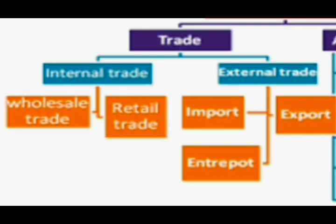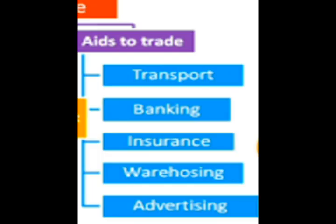When a producer has produced goods and wants to sell to the consumer, and when the consumer needs a good and is looking for the product, there are several hurdles, because the producer is far away from the consumer. The producer produces goods in anticipation of demand, so there is a need to keep those goods till demand arises. There are several transactions which take place in a day, making it very time consuming to count money and keep track of it. So to remove those hurdles, there are aids to trade: transportation, banking, insurance, warehousing, and advertising.